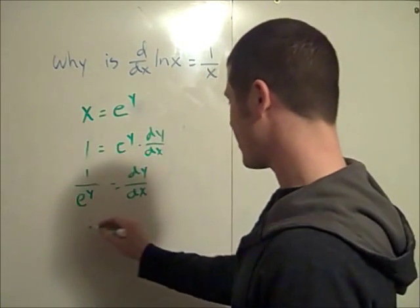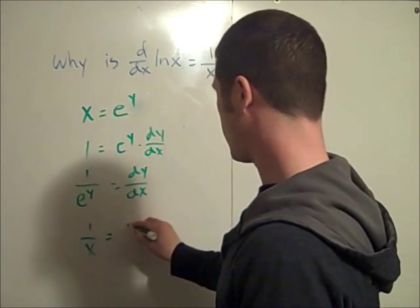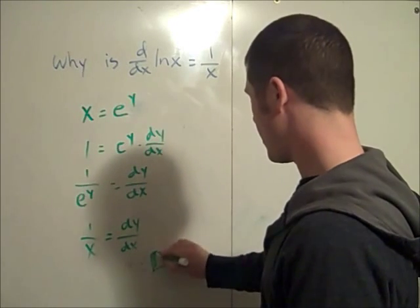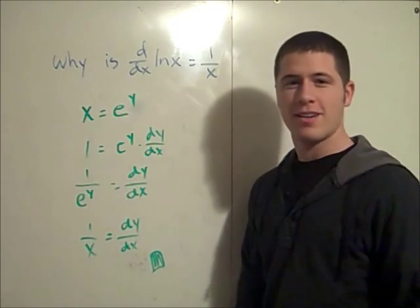So that means 1 over x equals dy by dx. Yay for math. Yeah, that's it.